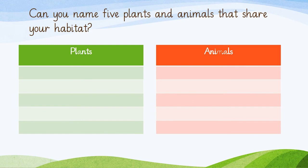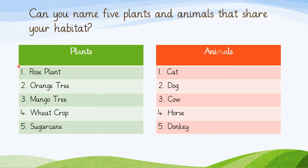Can you name 5 plants and animals that share your habitat? Think of some plants and animals present in the area where you live and put their names in order. You may find some of the following: rose plant, orange tree, mango tree, wheat crop, and sugar cane. For animals, you may find cat, dog, cow, horse, and donkey. These are some of the most common plants and animals present in the area where us human beings live.